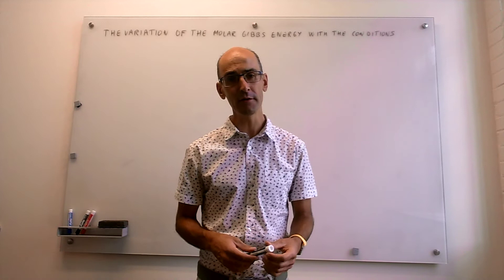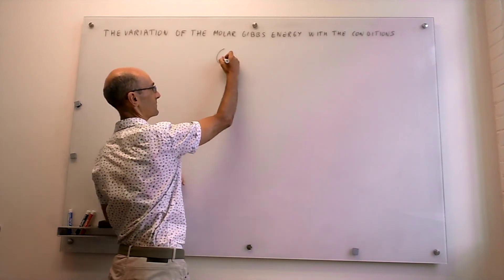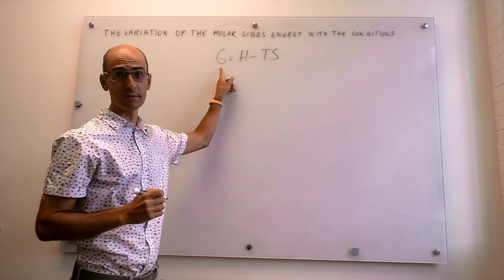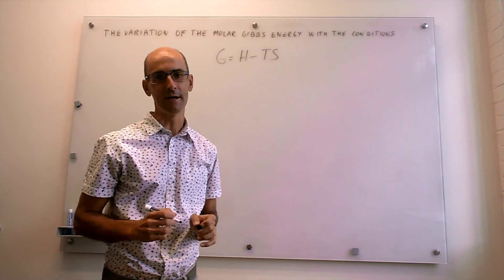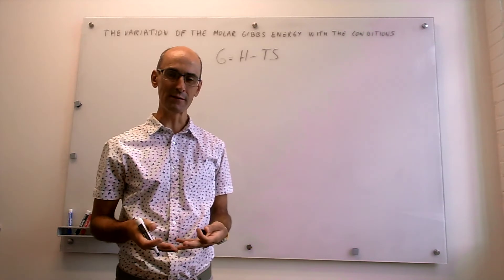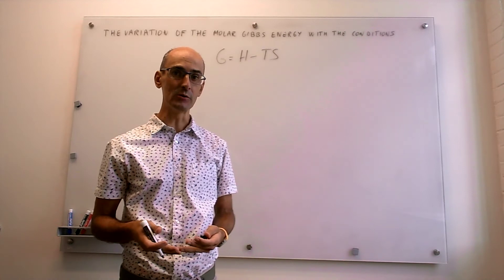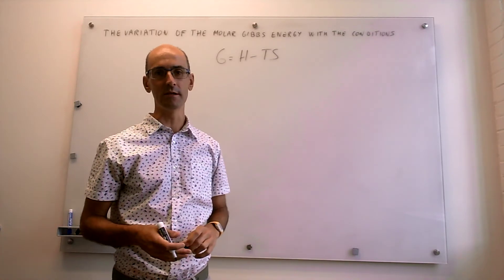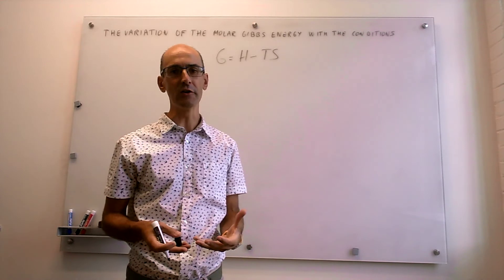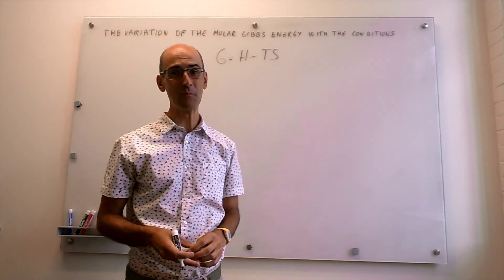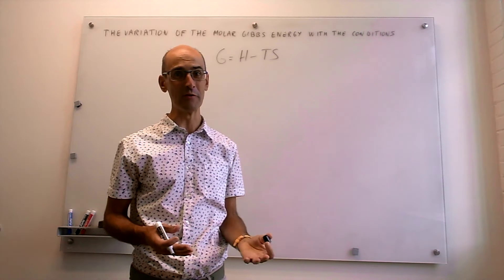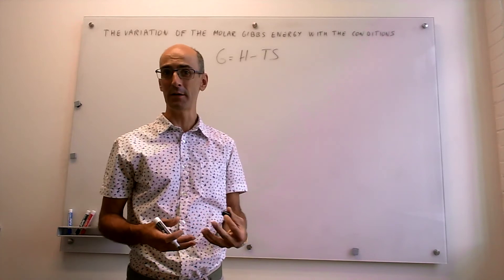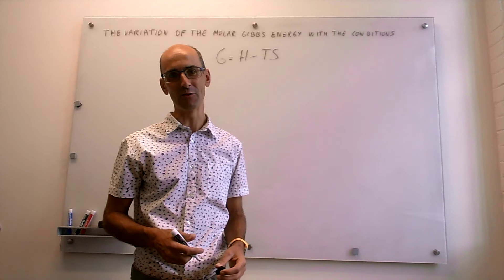We know that the definition of the Gibbs energy is as follows. The way to study how functions like the Gibbs energy depend on variables is by studying total derivatives, because the derivative of a function with respect to a variable tells you the sensitivity of that function — in this case a thermodynamic property like the Gibbs energy — to its possible variables. So what we're going to do in this video is simply take total derivatives of the Gibbs energy and see how that depends on the variables.